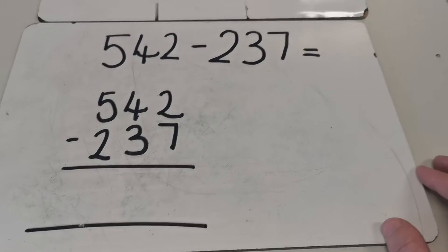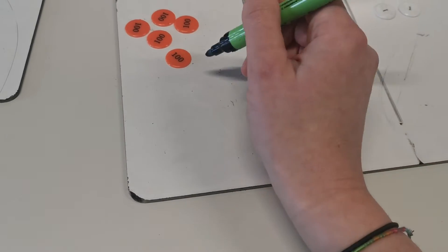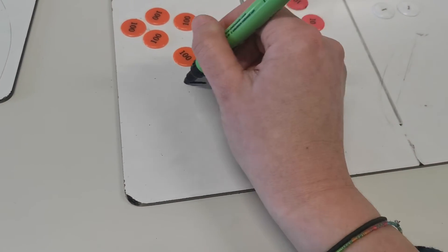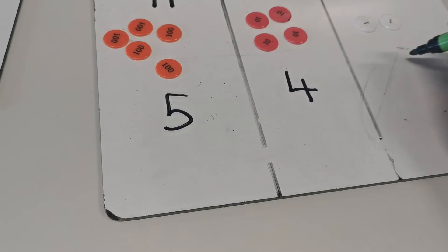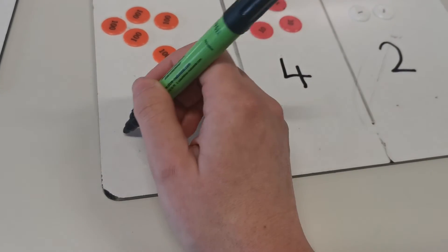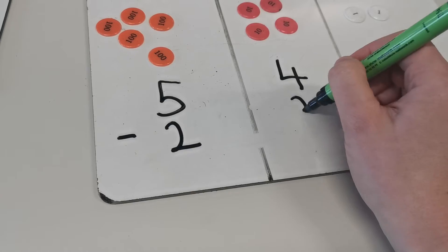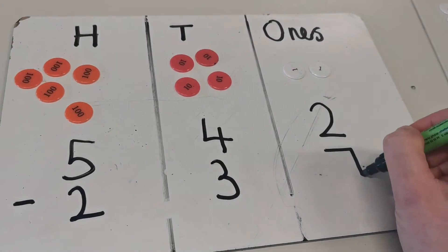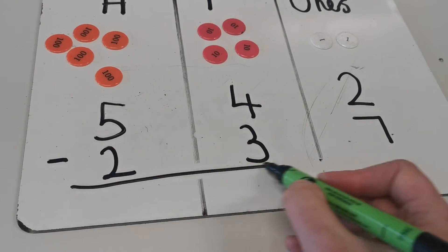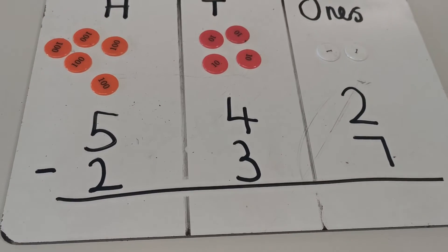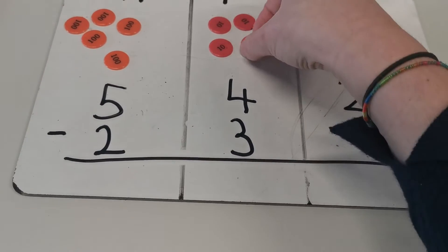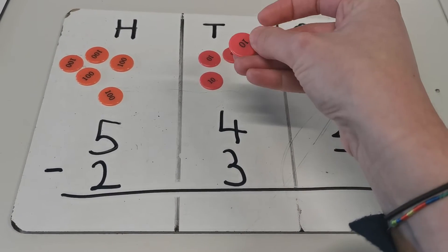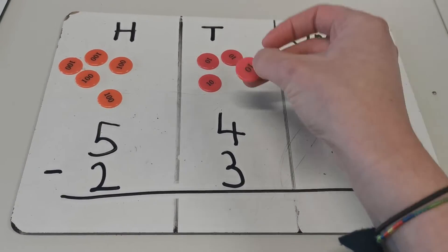So I'm going to show you again using my place value counters. I've got one, two, three, four, five hundred and forty-two, and I'm subtracting 237. Draw a line underneath here. I can't subtract seven away from two, so what I need to do is I need to regroup and exchange one of these tens for ten ones: one, two, three, four, five, six, seven, eight, nine, ten.